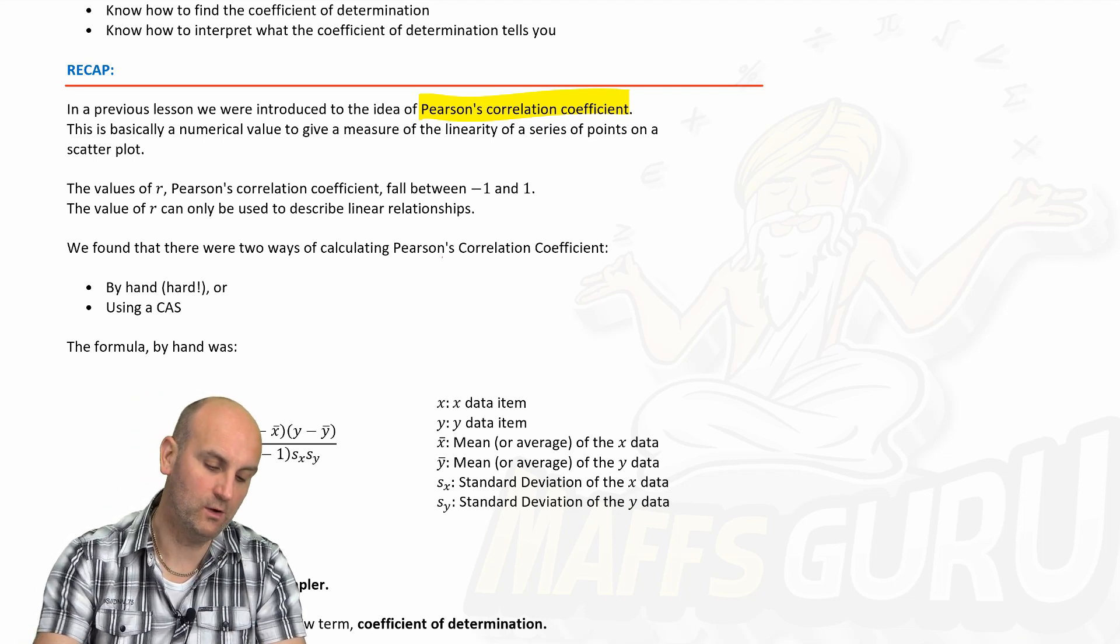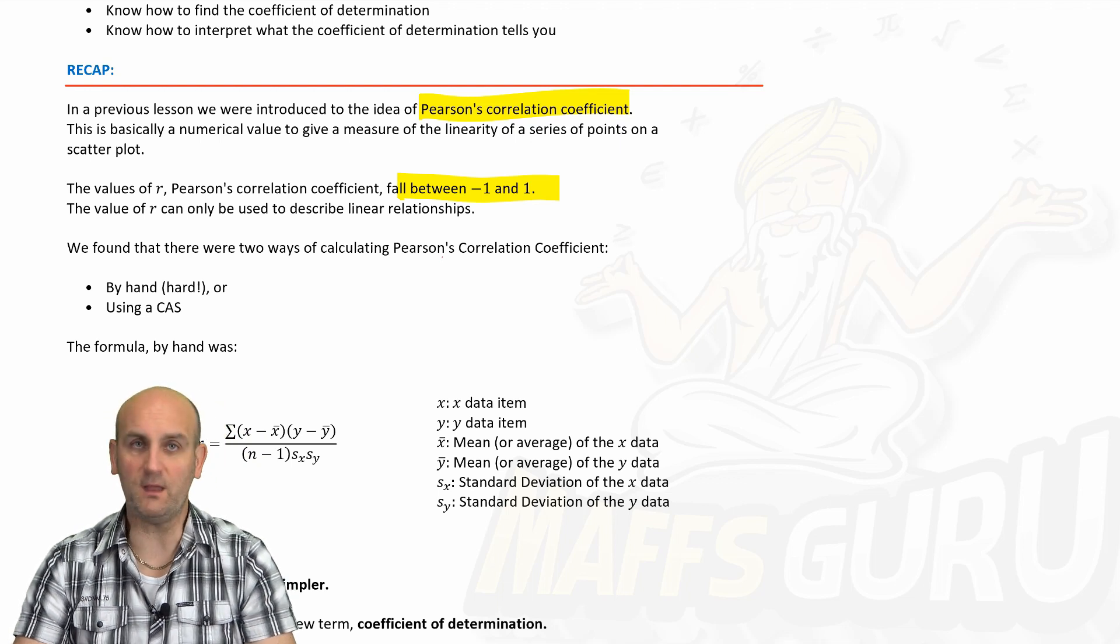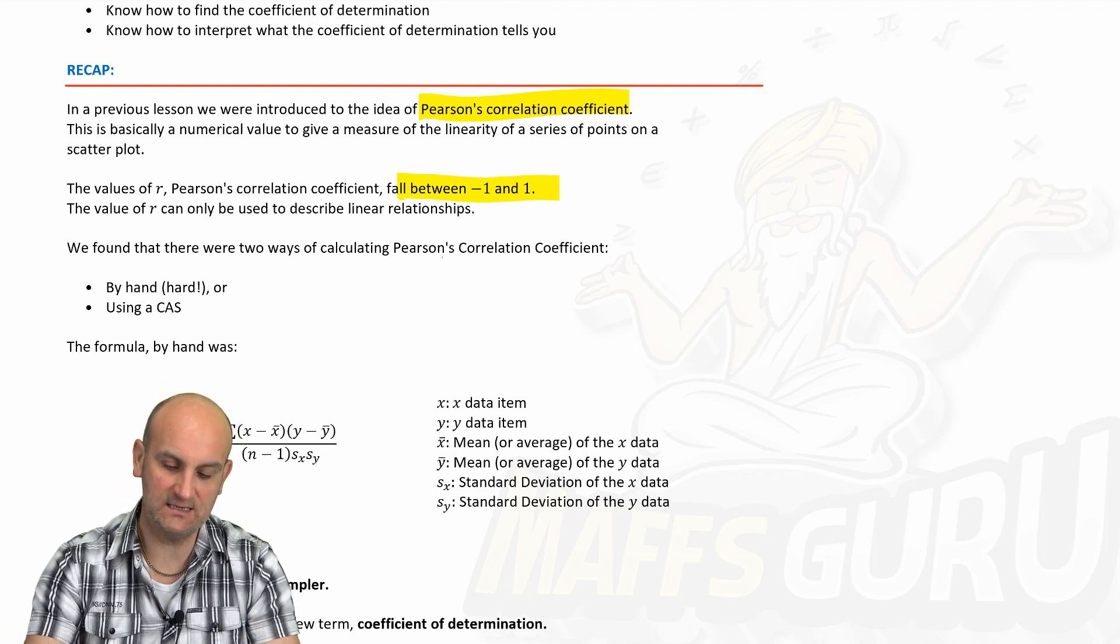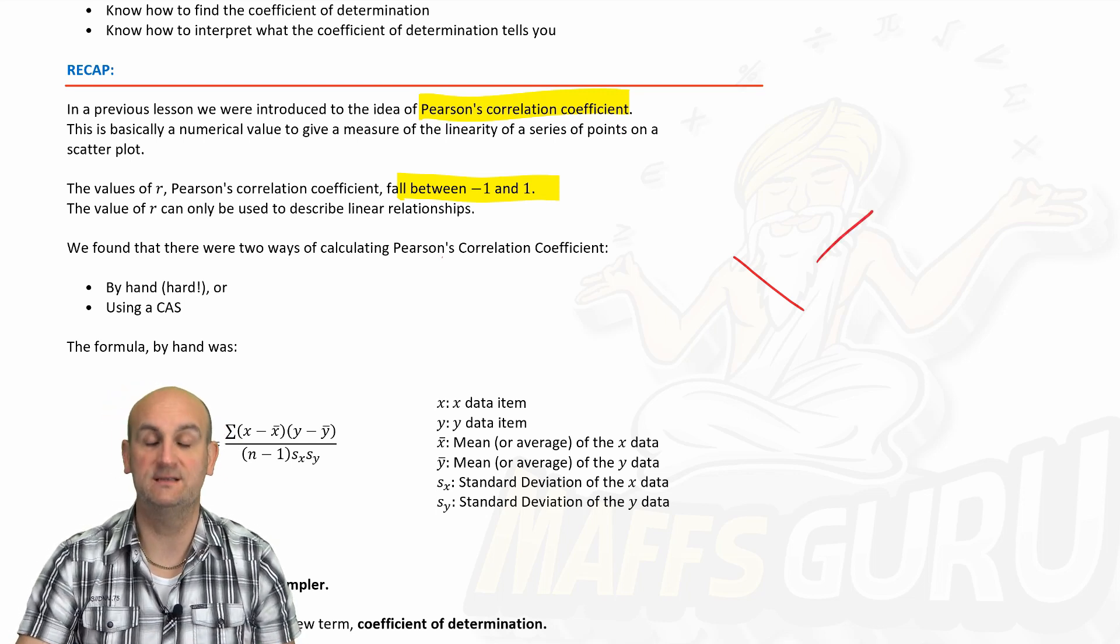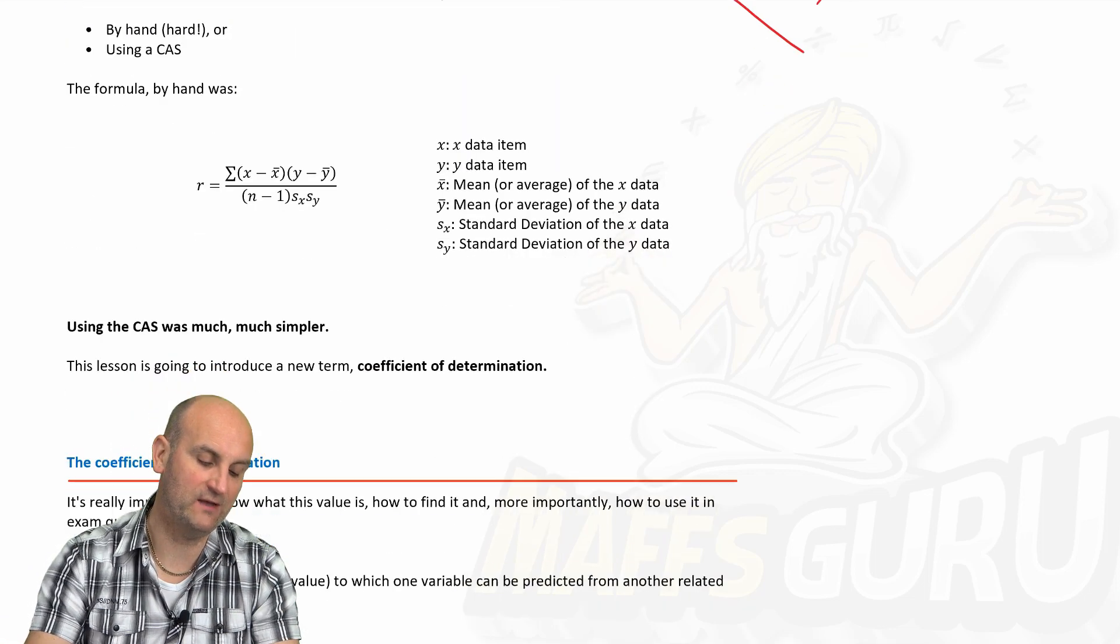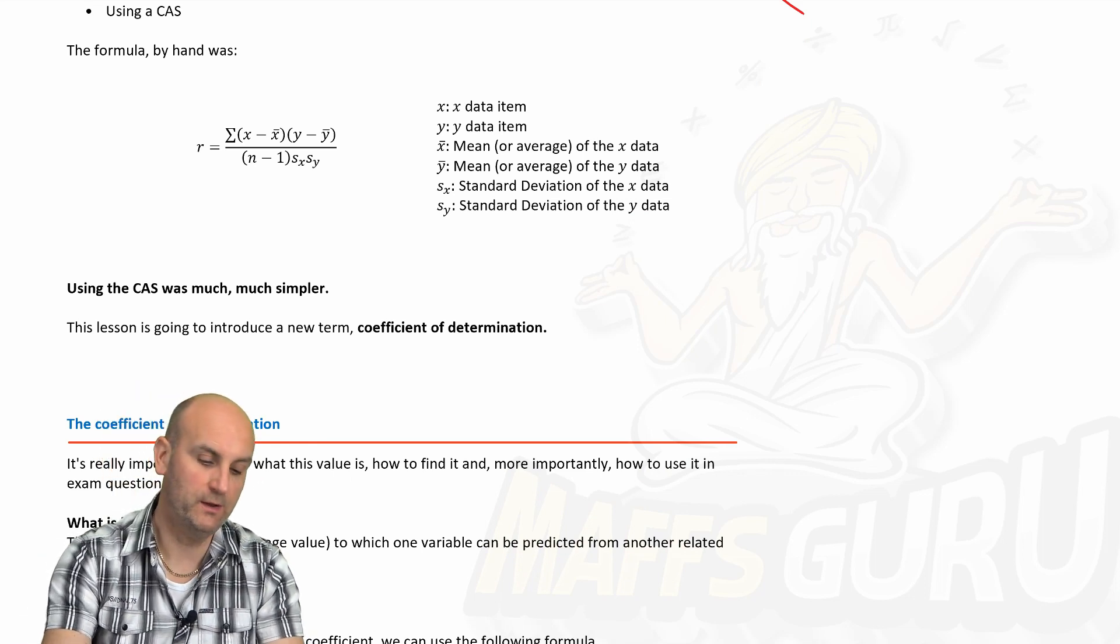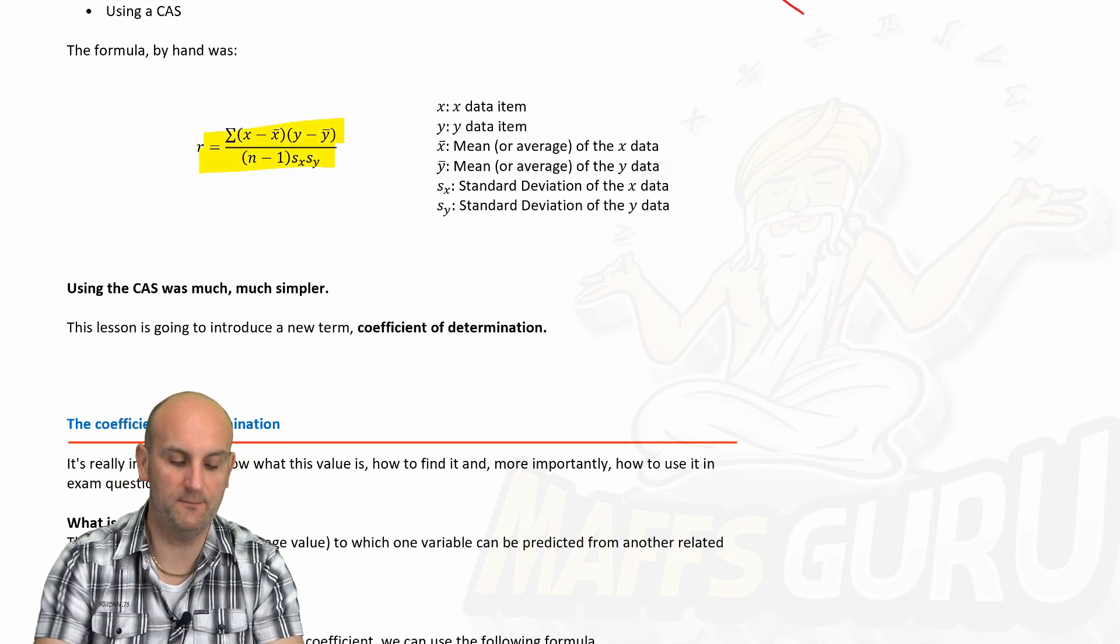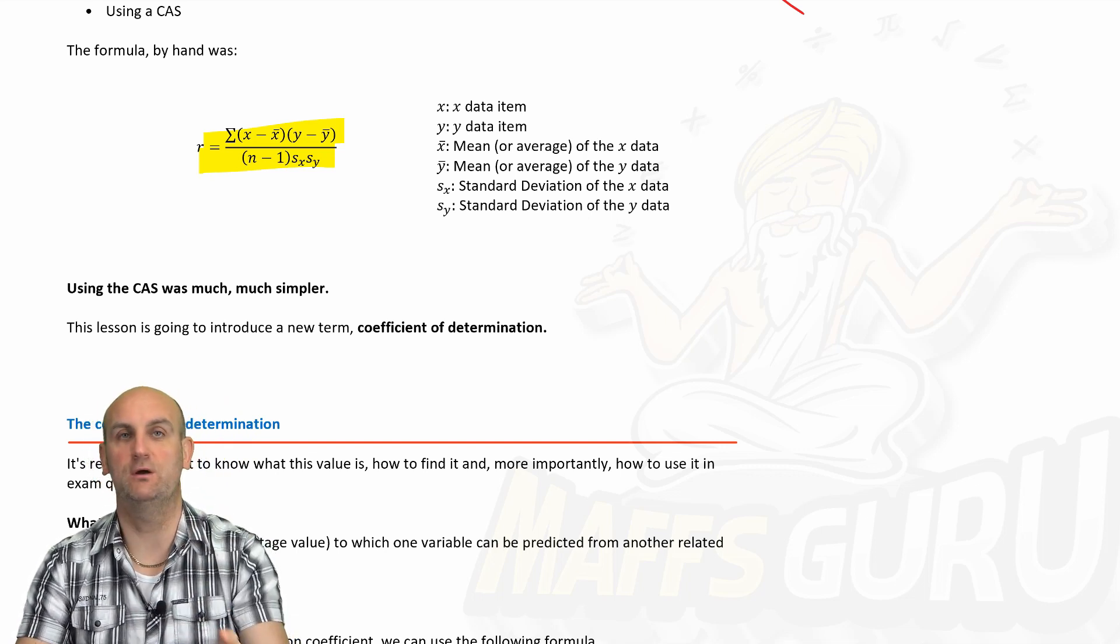We know that the value of R falls between minus 1 and 1, so minus 1 is a perfectly negative association, 1 a perfectly positive association, and 0, well the points are all over the place. And we found there were two ways of doing this, by hand and using the CAS. The by hand formula was disgusting, and if you haven't watched this video, it's really short, but it shows you how to use this formula. That was the correlation coefficient.